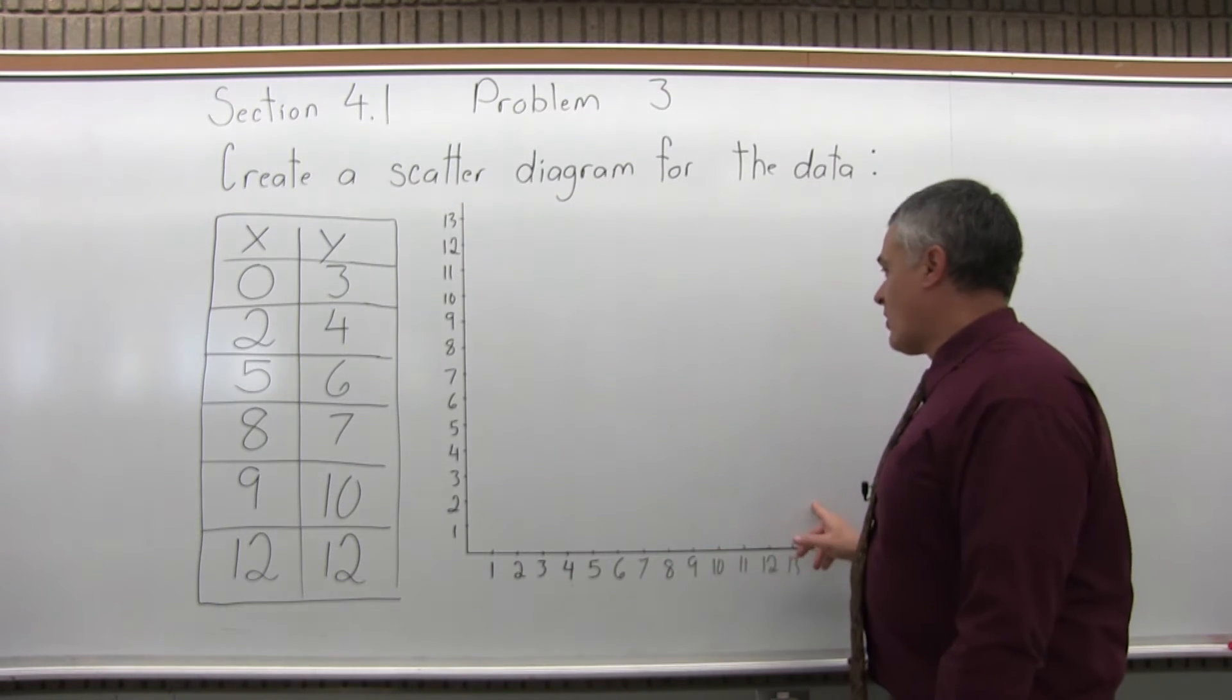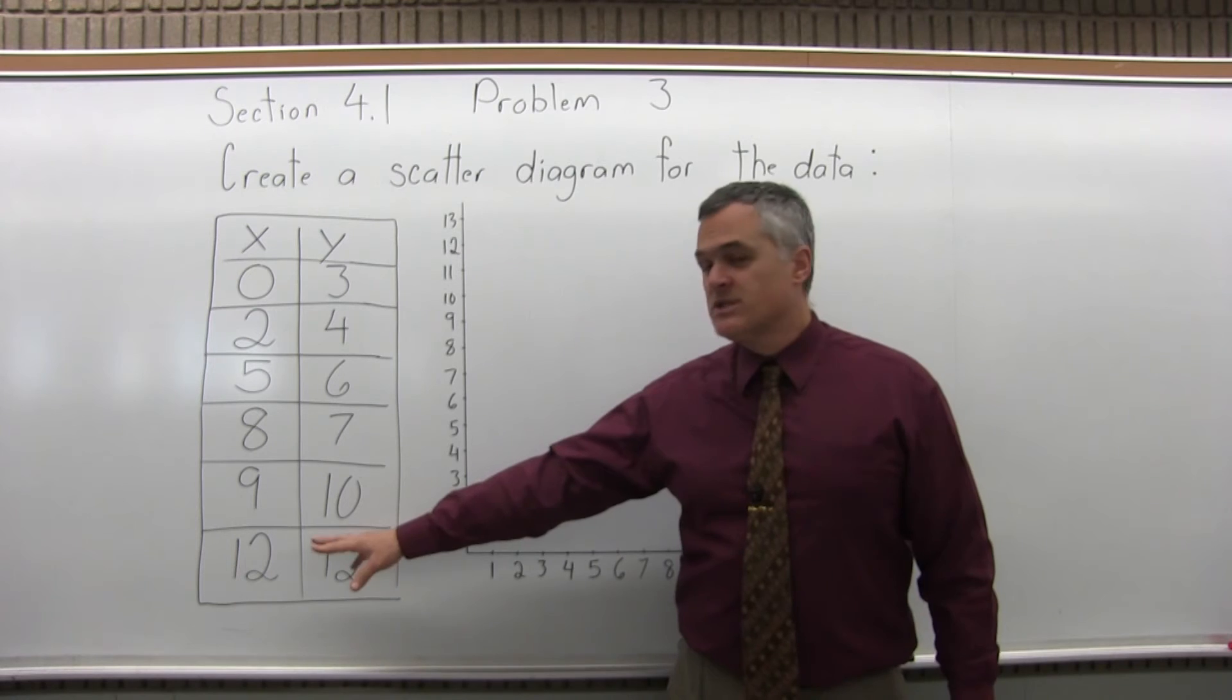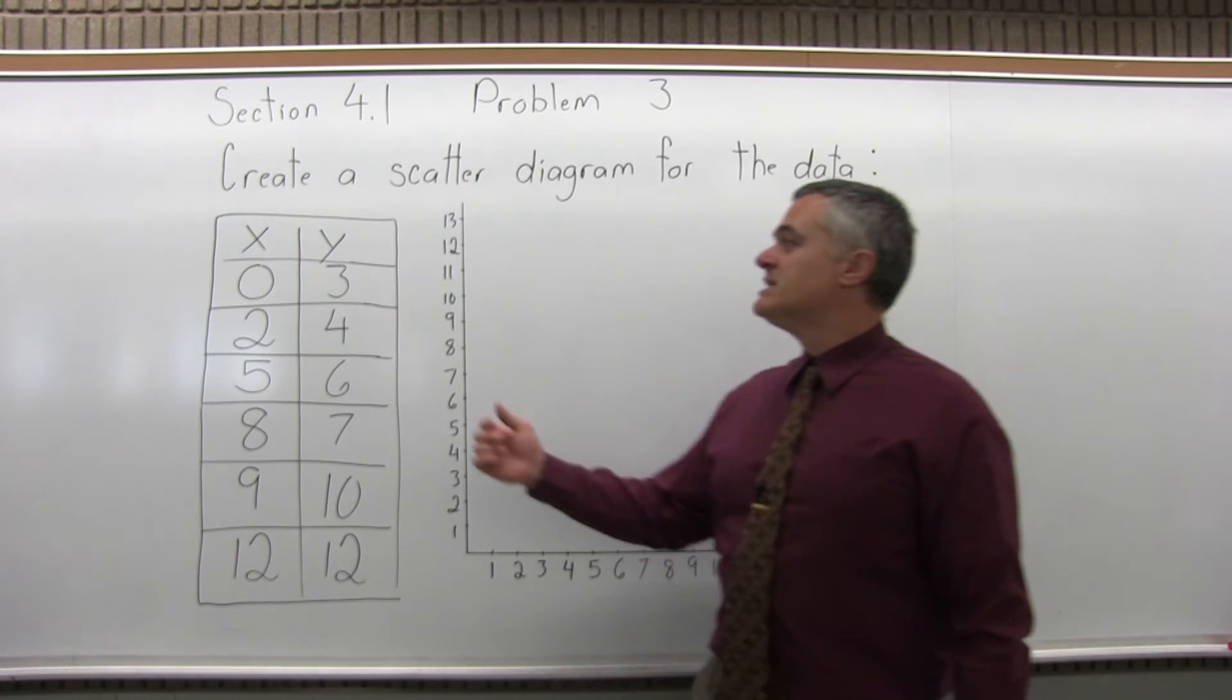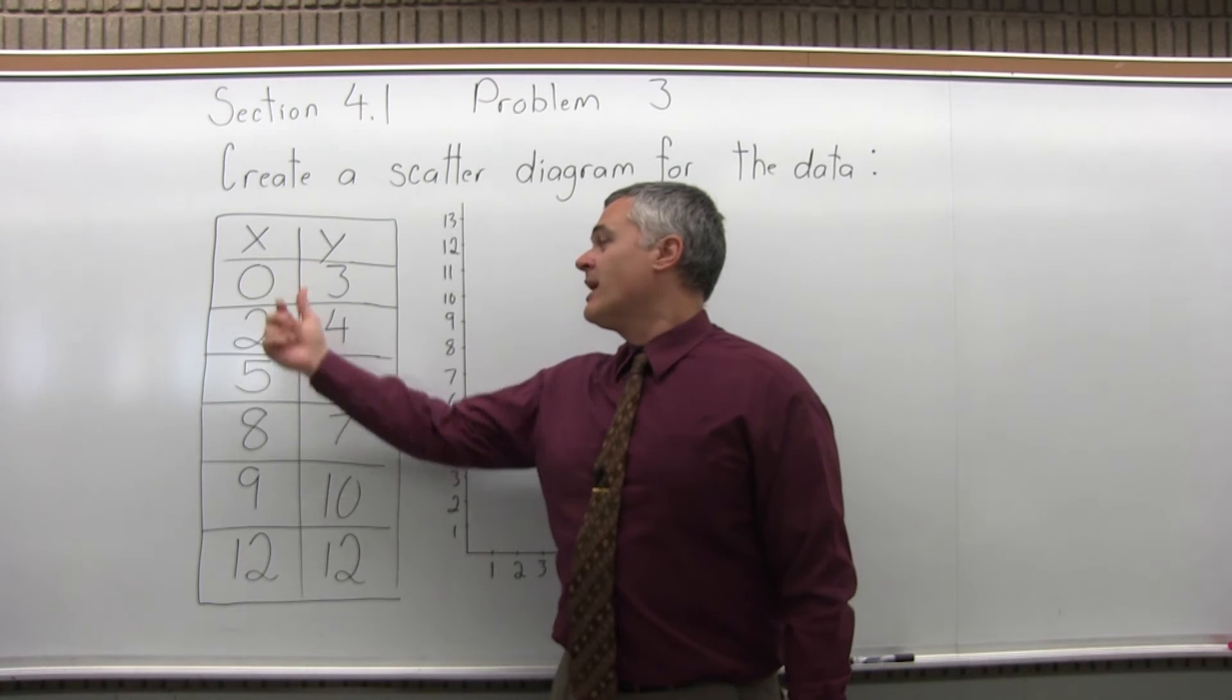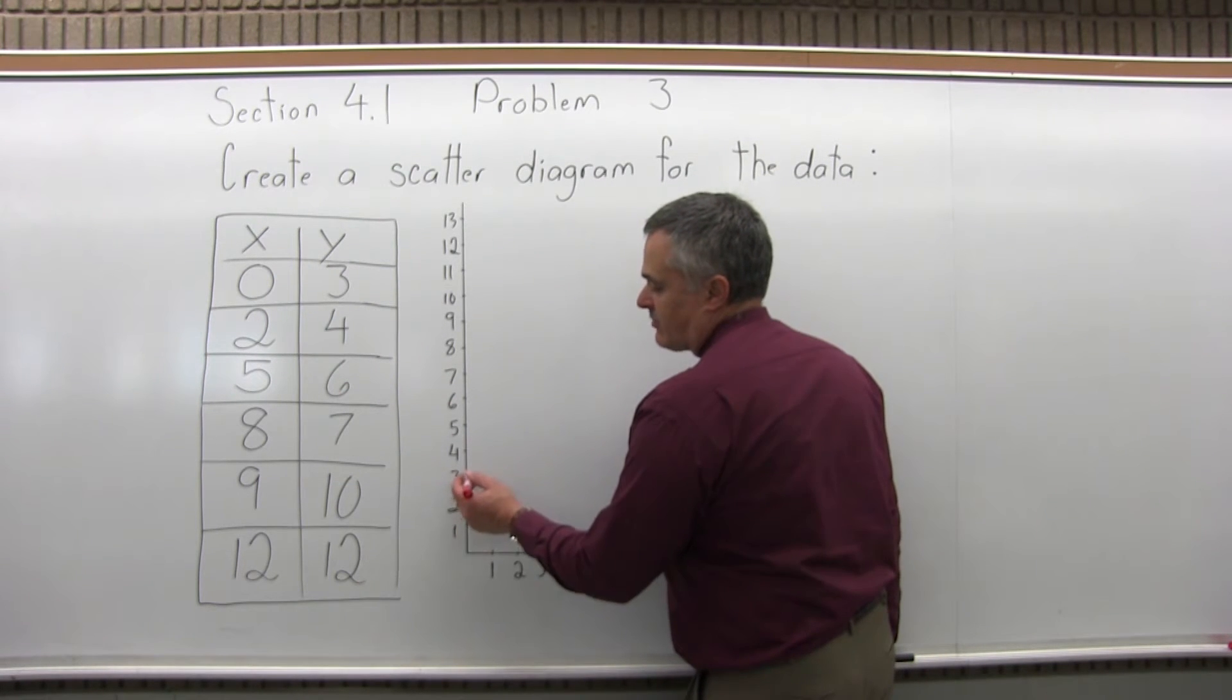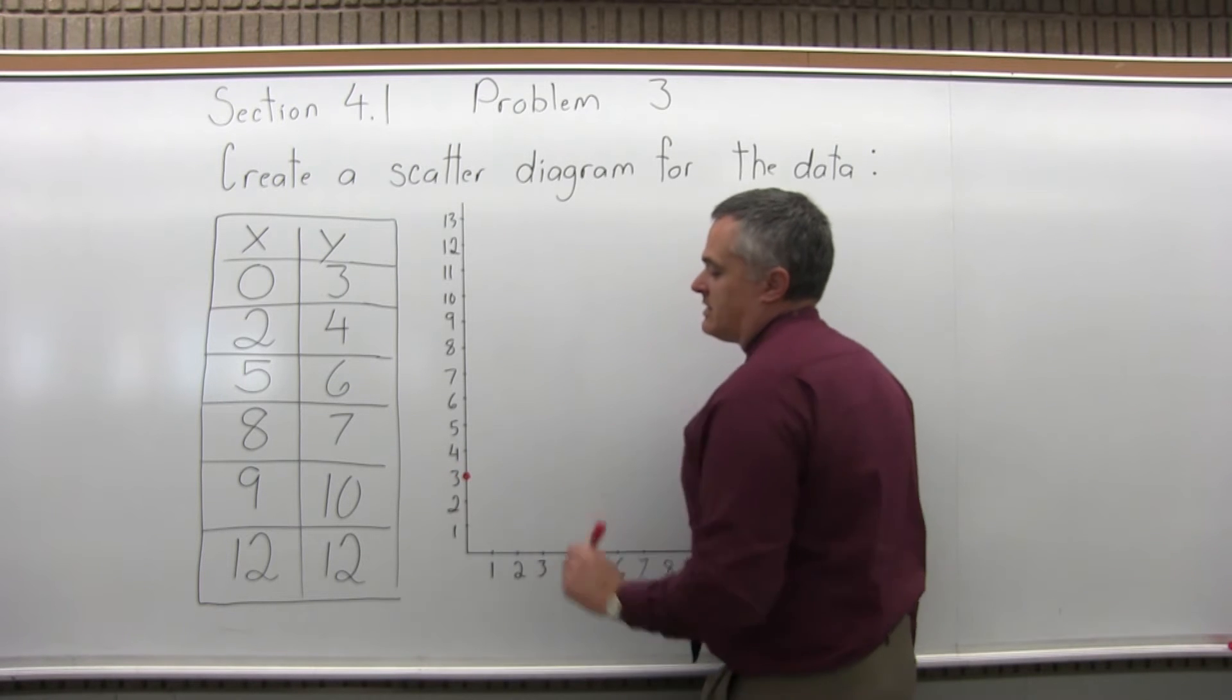The x-coordinate and y-coordinate both go up to 13, which is a little bit bigger than I need. It should work well. So the first point is 0, 3. x is 0, and y is 3. So if I go over 0 for x and up 3 for y, this is my first point.